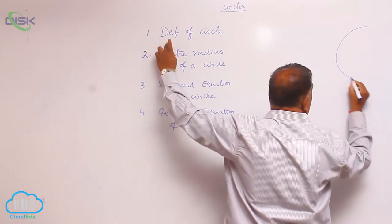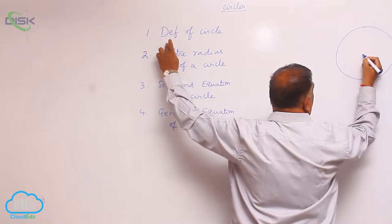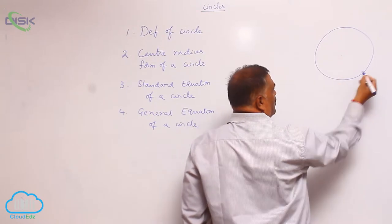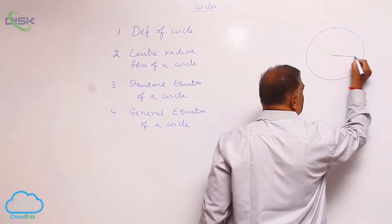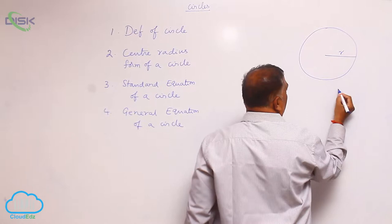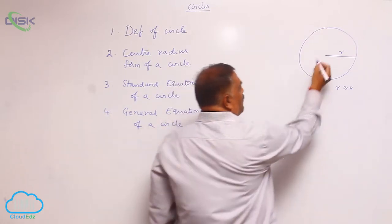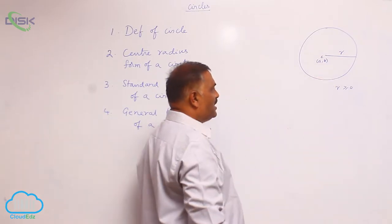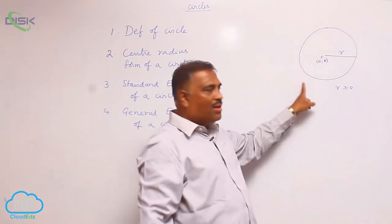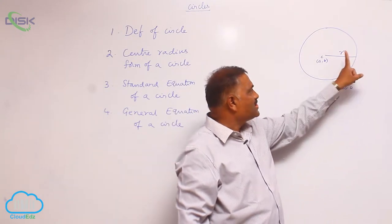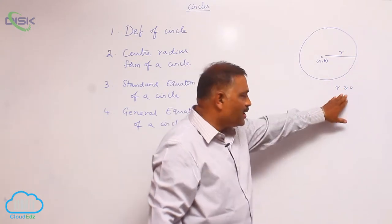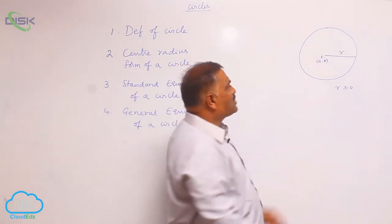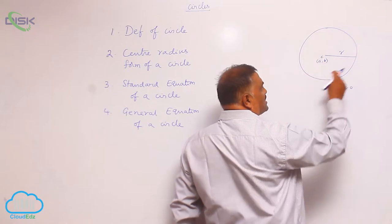The set of points in a plane which are at a constant distance greater than zero from a fixed point (a, b) — the collection of all these points is called a circle.